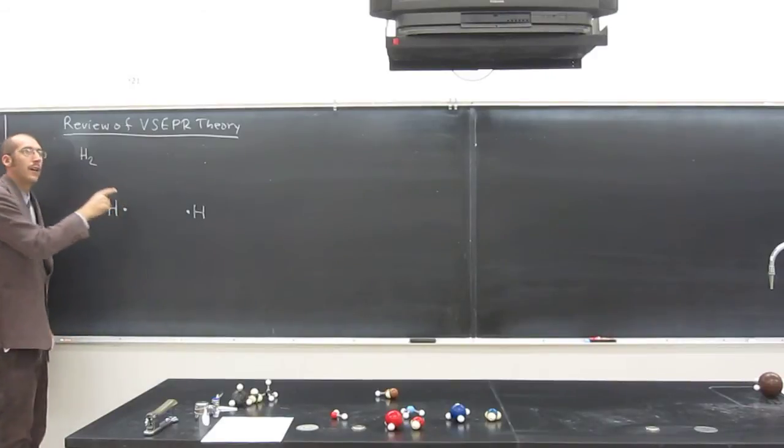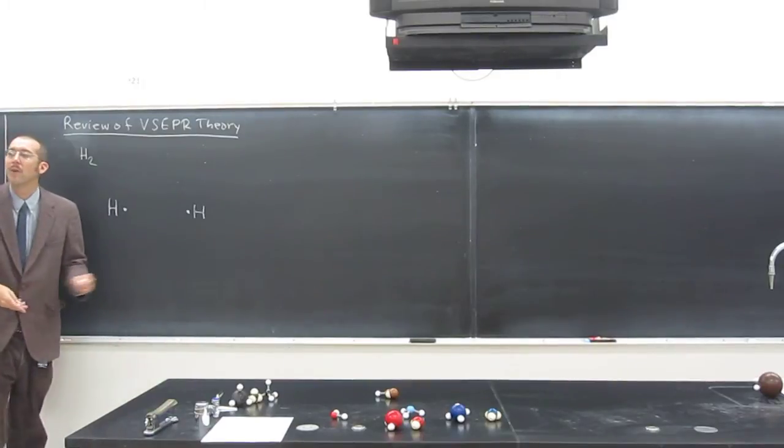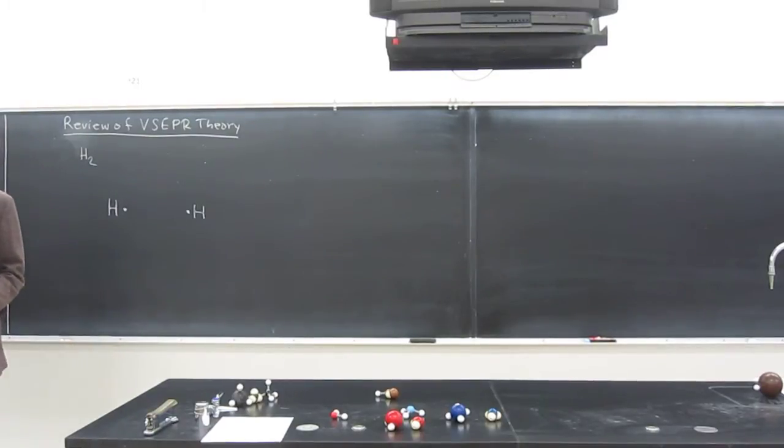And we know that neon—helium, sorry—helium is the noble gas that it's trying to be configured like, and helium has two electrons. So we know that hydrogen wants the one extra electron.